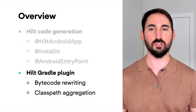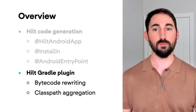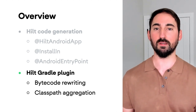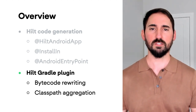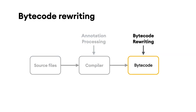Now that you've seen how code generation works in Hilt, let's take a look at the Hilt Gradle plugin. The Hilt Gradle plugin performs a lot of useful tasks, including bytecode rewriting and classpath aggregation. Bytecode rewriting is the process of rewriting bytecode. Unlike annotation processing, which can only generate new code, bytecode rewriting can rewrite existing code. When used sparingly, this feature can be very powerful.